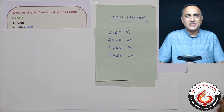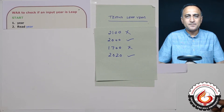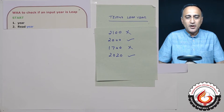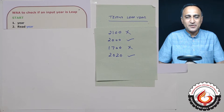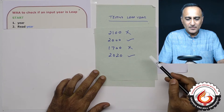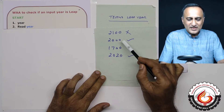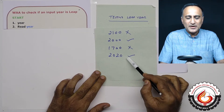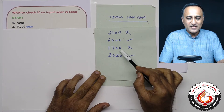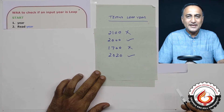We are now going to discuss how to write the algorithmic logic to find out if a given input year is a leap year or not. If you take a look at all these years, only the year 2000 and the year 2020 are leap years. The year 2100 and the year 1700 are not leap years.